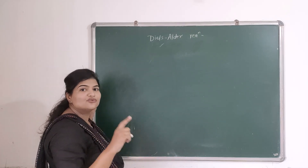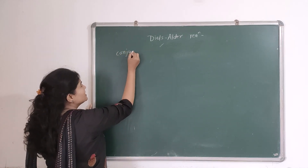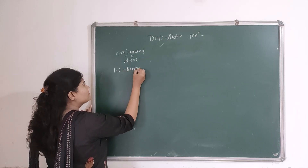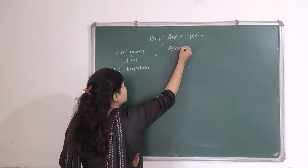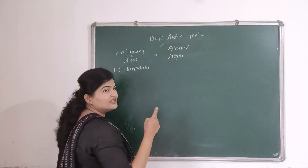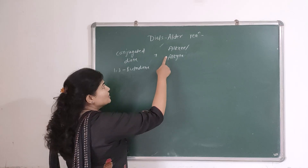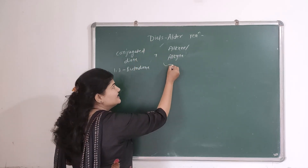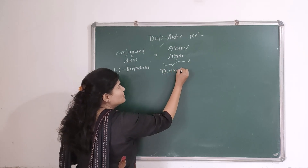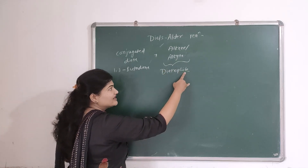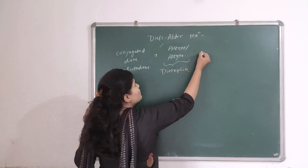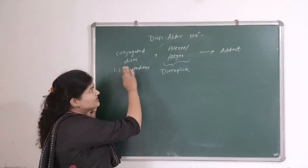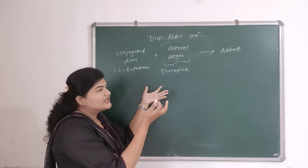For the Diels-Alder reaction we need a conjugated diene — we will take 1,3-butadiene as our example — and react it with a simple alkene or alkyne. The alkene or alkyne must contain a double or triple bond. This entity that is attracted towards the diene is called a dienophile — 'phile' means loving, so dienophiles are diene lovers. The product formed is called an adduct, and we get 100% product.